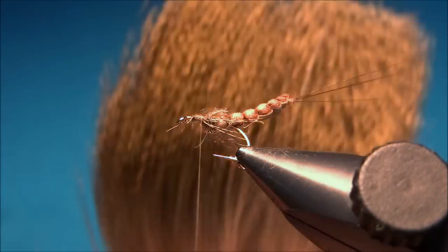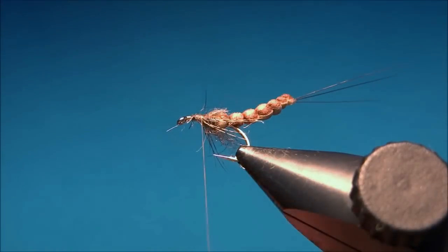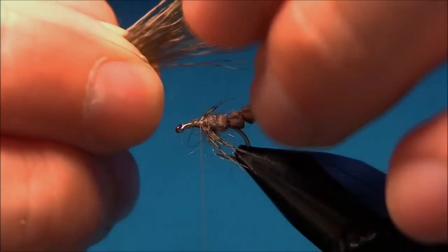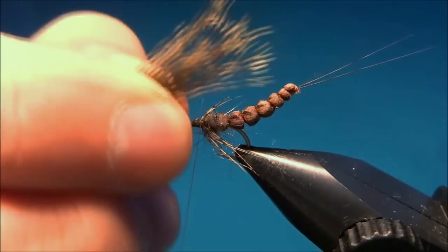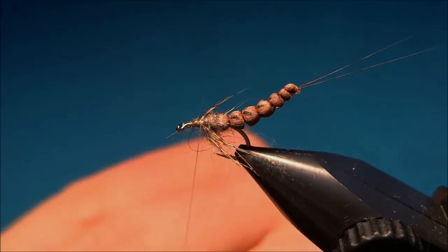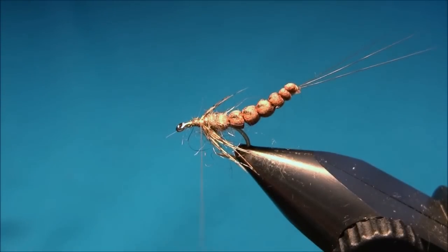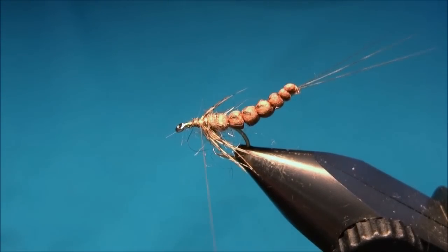And for the wing I use some natural deer hair. Just cut off a bunch. So you don't want it to be too heavy. Remove the under fluff. That's a little too much I think, yep there we have it.